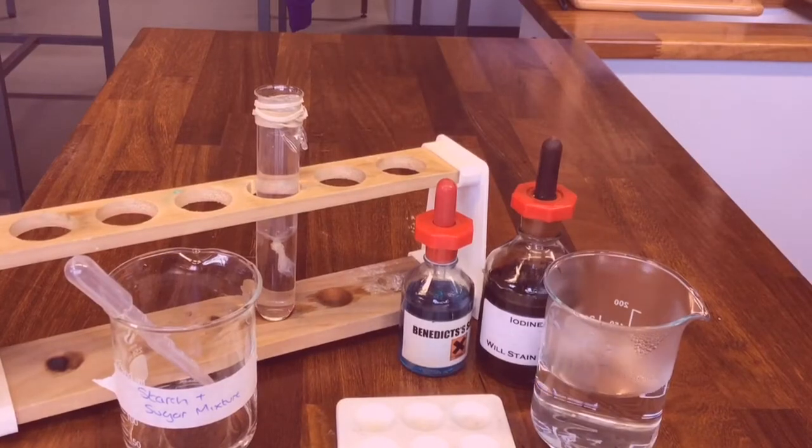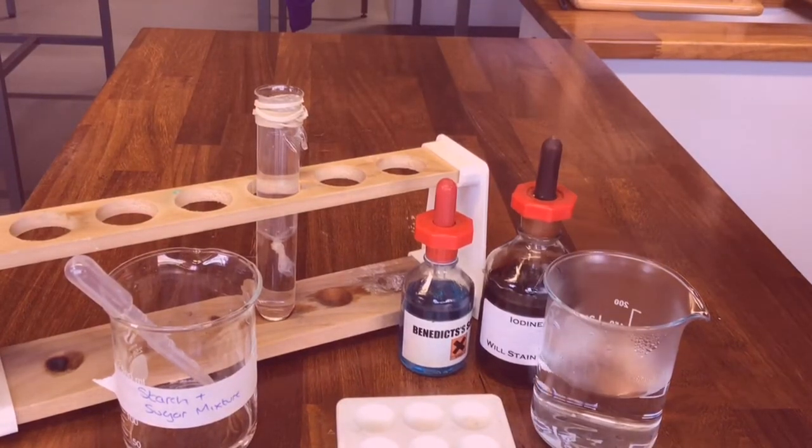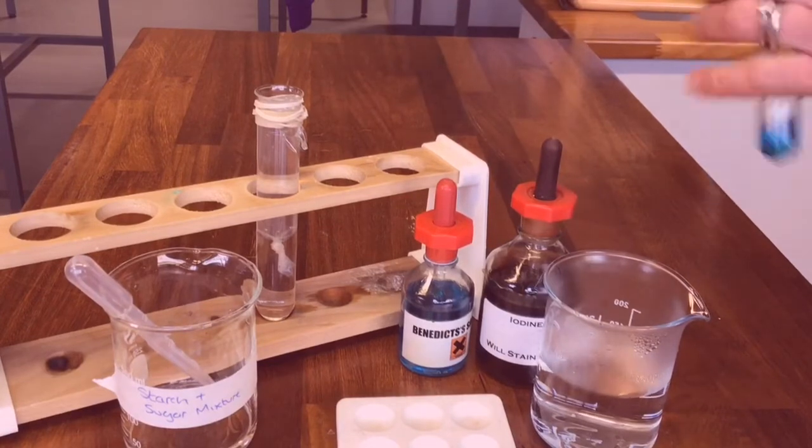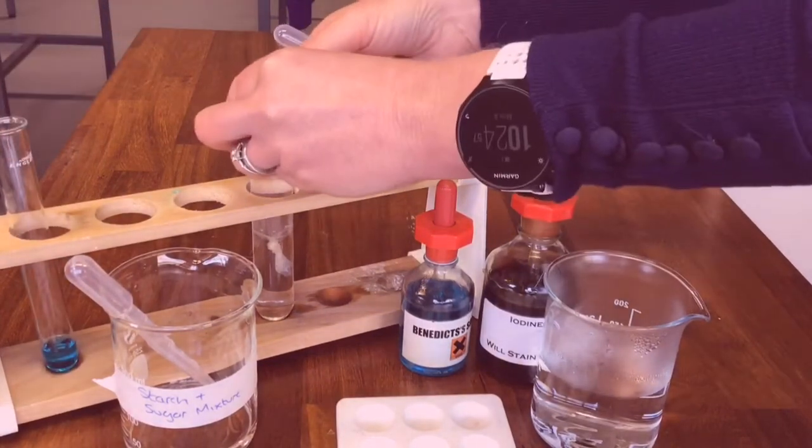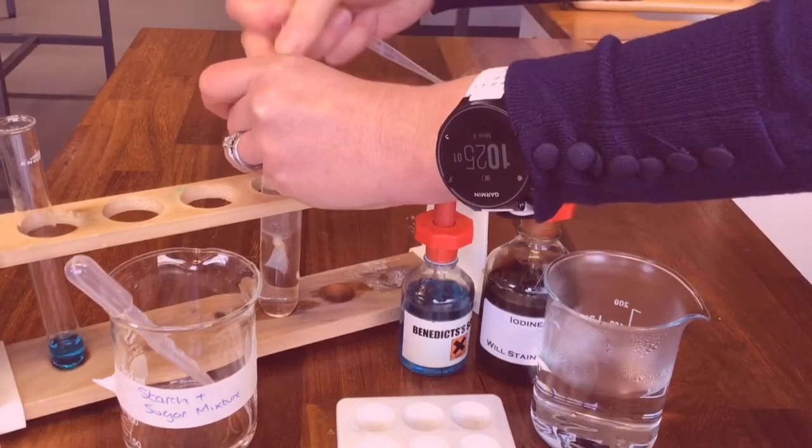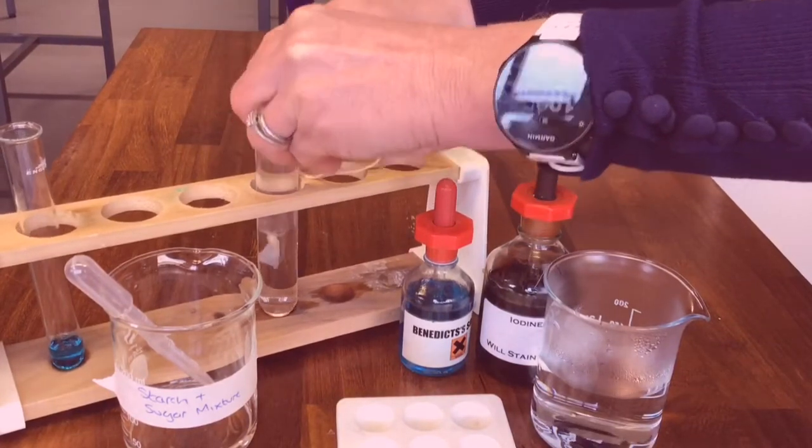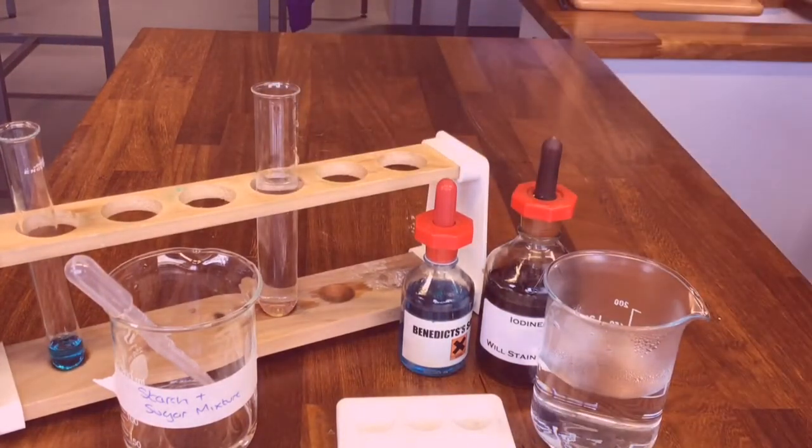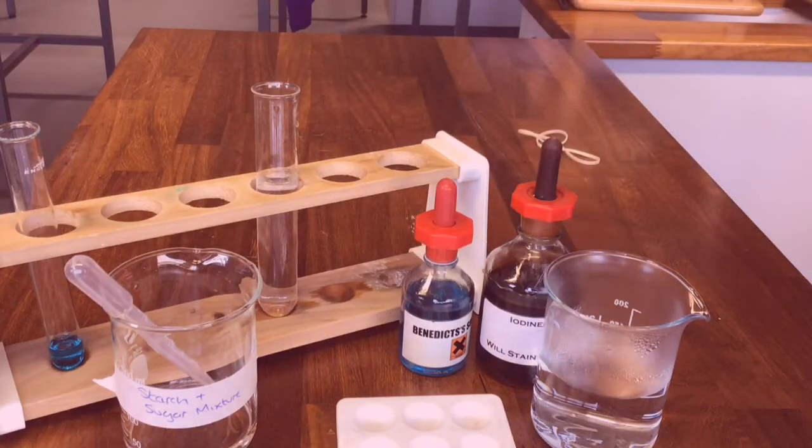For our model gut it's been left for 10 minutes so we are now going to remove the visking tubing because we no longer need its contents and we are now going to test the contents of the liquid to see if there's sugar present or starch present or both.